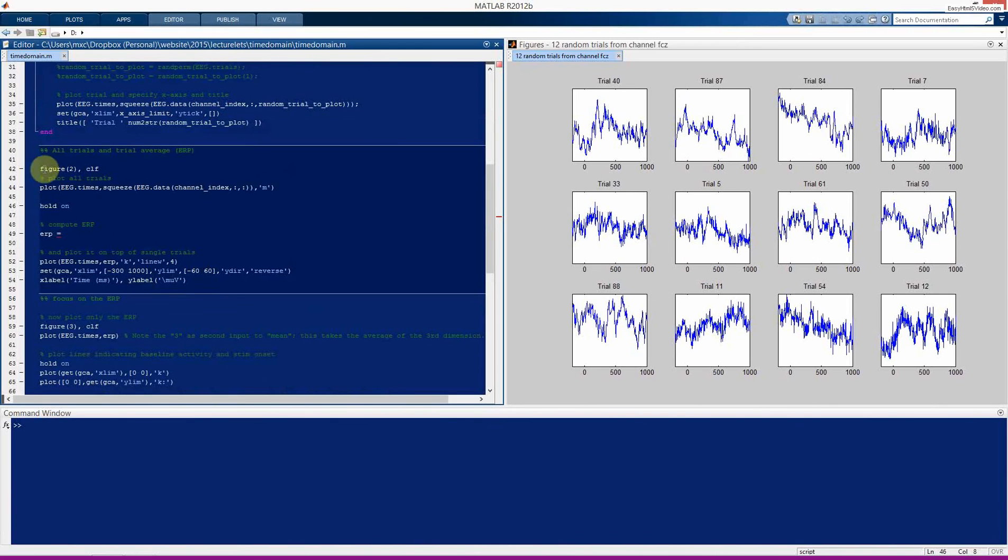So now in this cell starting on line 40, we are going to compute the ERP and then plot it. You can see here, we're going to plot the EEG.times vector by the ERP. And here on line 49 is where we will compute the ERP. So you can see that it's missing here. So I encourage you to pause the video or type very quickly and try and figure out how to create this ERP, how to finish this piece of code. And remember that the ERP is simply the mean or the average of the EEG data from this electrode over all of the trials.